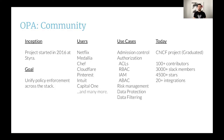The OPA project was started in 2016 at Styra, and the goal of the project has been to unify policy enforcement across the stack. One of the earliest adopters of OPA was Netflix, and they've been using OPA for authorization over their HTTP and gRPC APIs. Companies like Chef, Pinterest, Intuit, Capital One, and many more have been using OPA in production for use cases such as admission control, RBAC, ABAC, data protection, and so on.